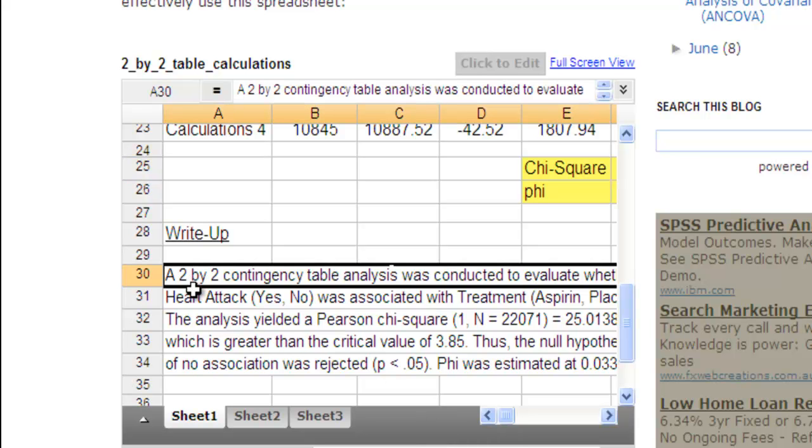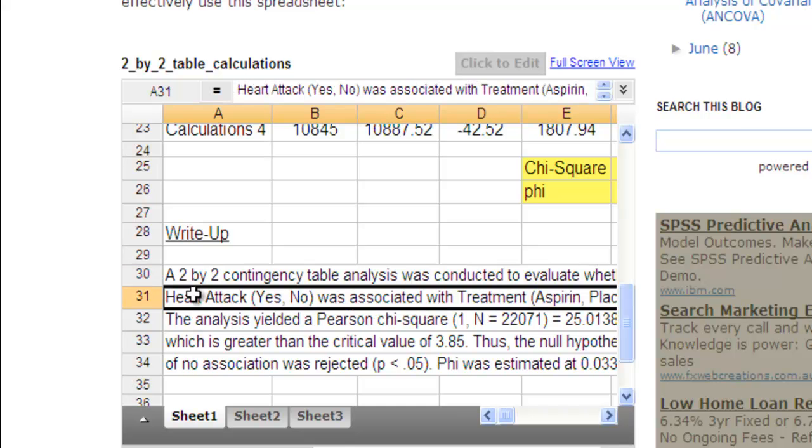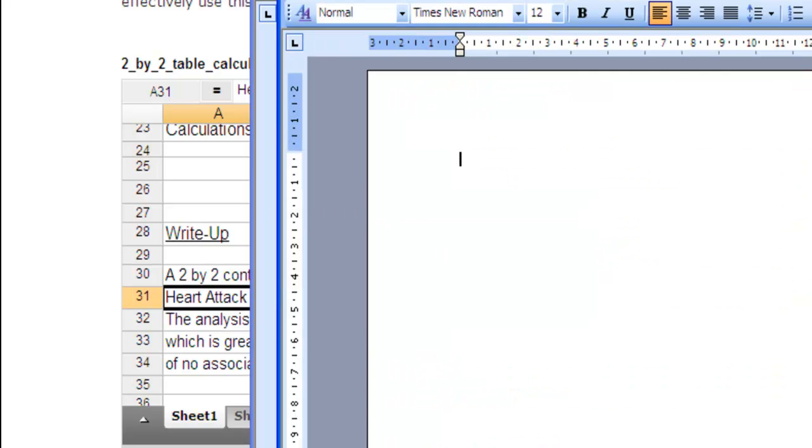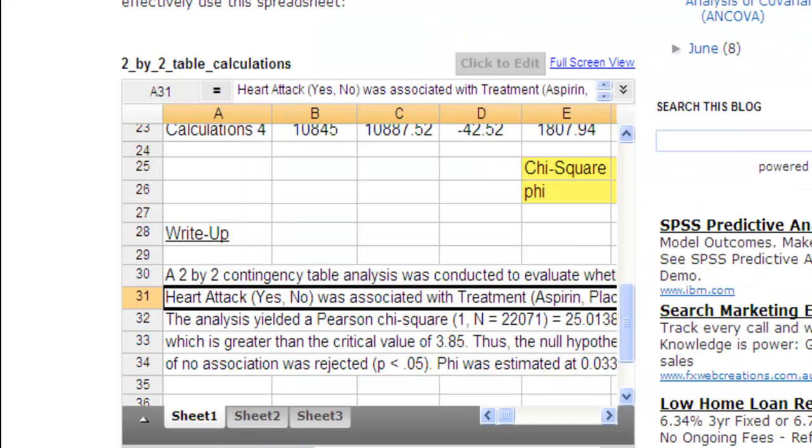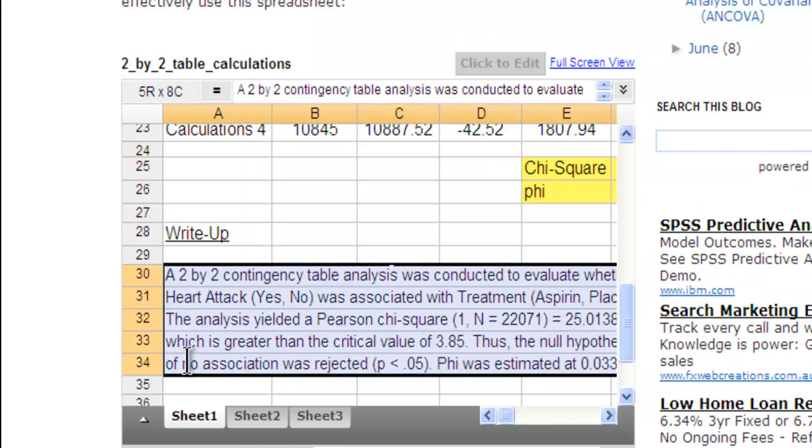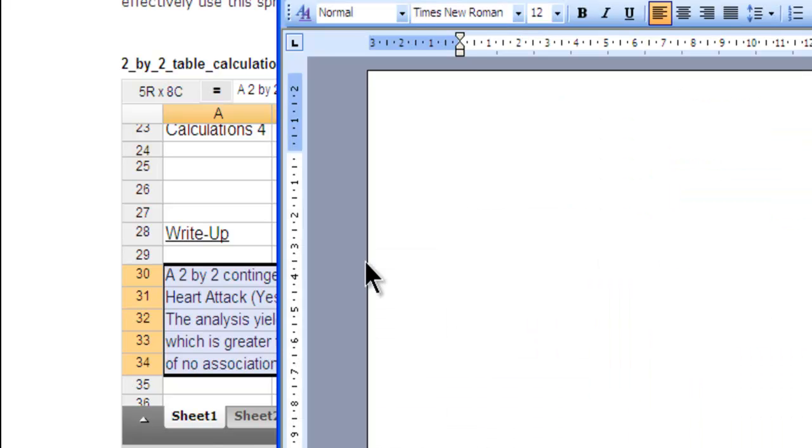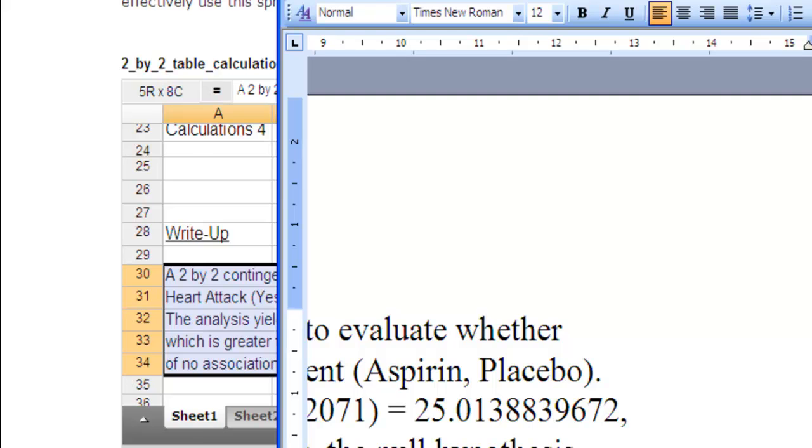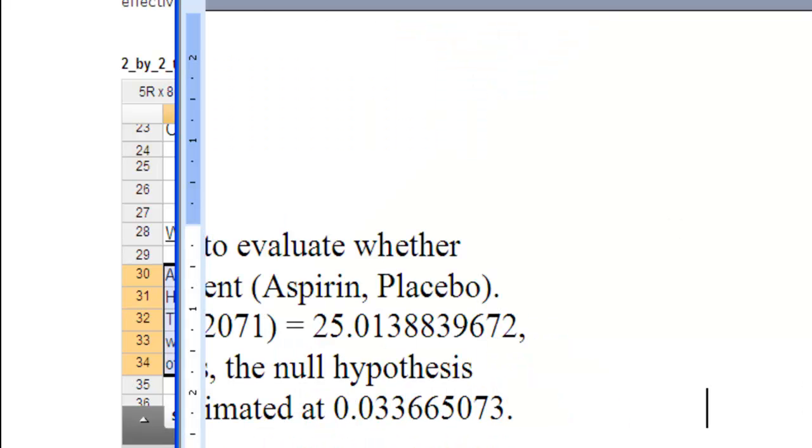So a 2x2 contingency table analysis was conducted. And then see how it says heart attack here, yes, no, was associated with treatment. The best way to read this is to actually get a new blank document, and just grab this like this, and then copy, Control-C, and then just paste. And that will show up, something that you can include in a report, just like that.